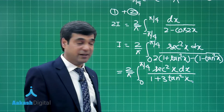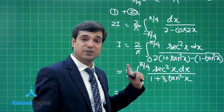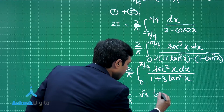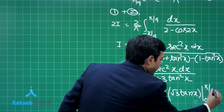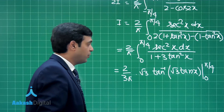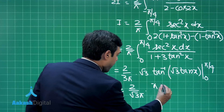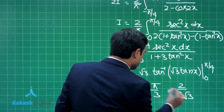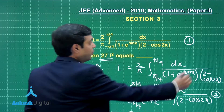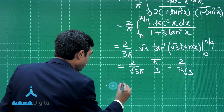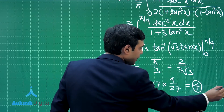This simplifies to (2/π) integral from 0 to π/4 of sec²x dx divided by (1 + 3tan²x). Substituting t = tan x, dt = sec²x dx, and taking 3 common, we get (2/3π) times √3 · tan⁻¹(√3 tan x) evaluated from 0 to π/4. At x = π/4, tan⁻¹(√3) = π/3, giving I = (2/√3π)(π/3) = 2/(3√3). Therefore 27I² = 27 × (4/27) = 4.